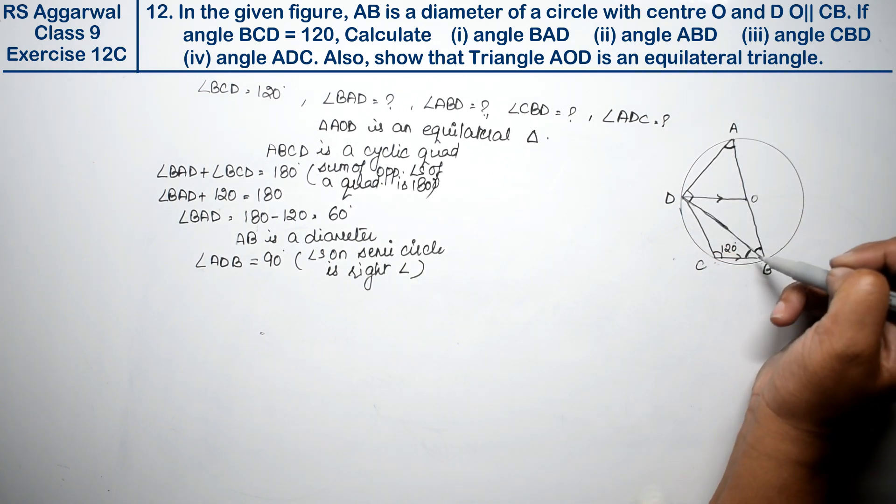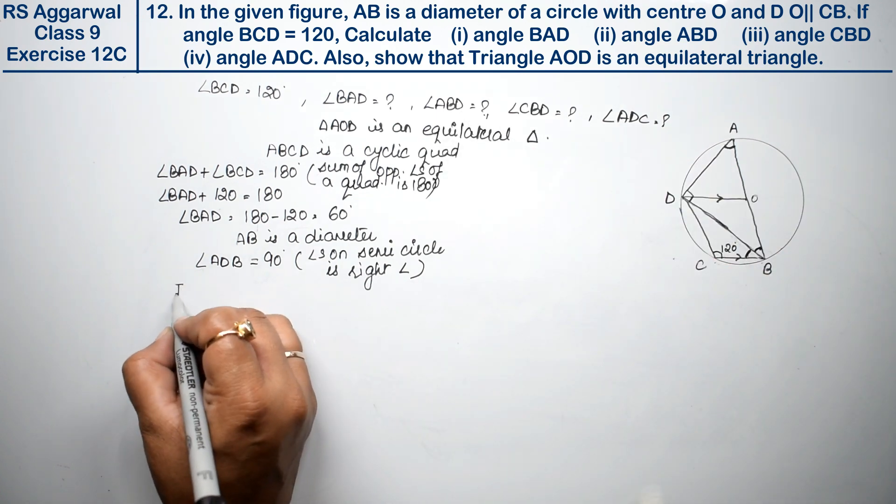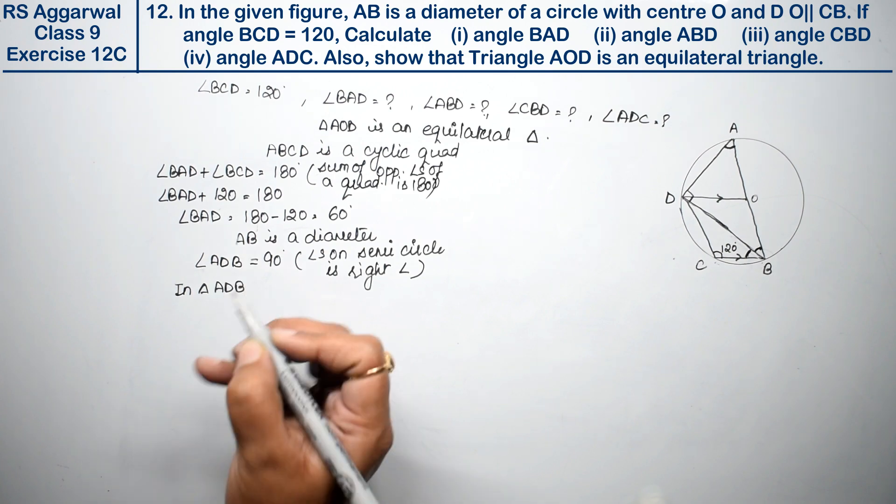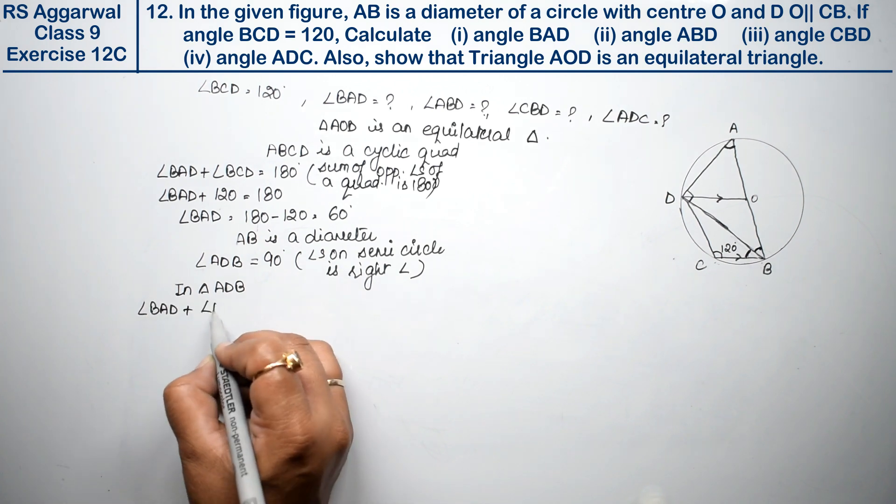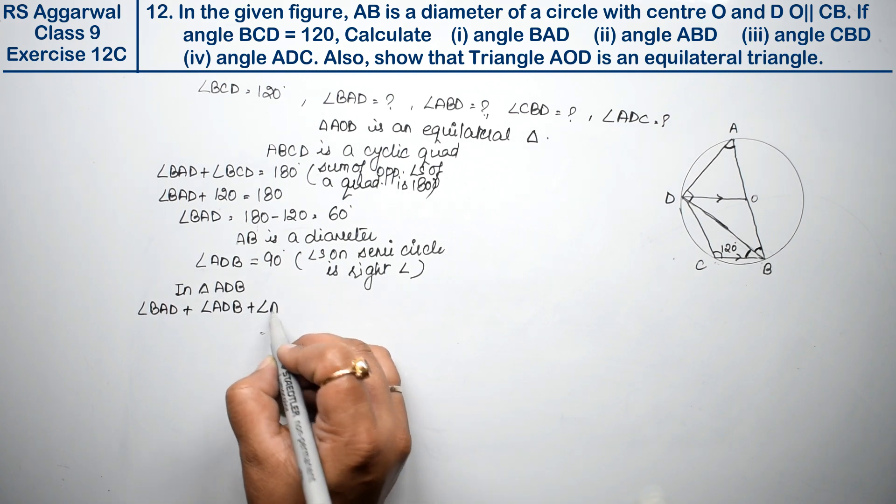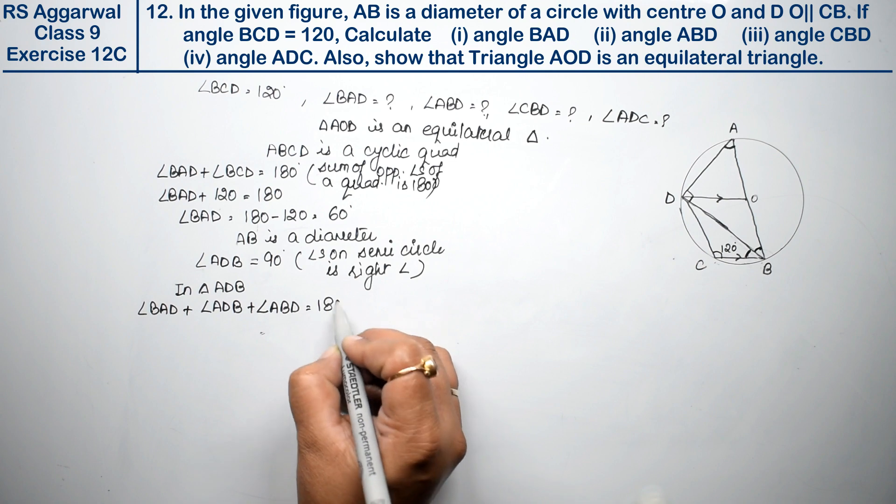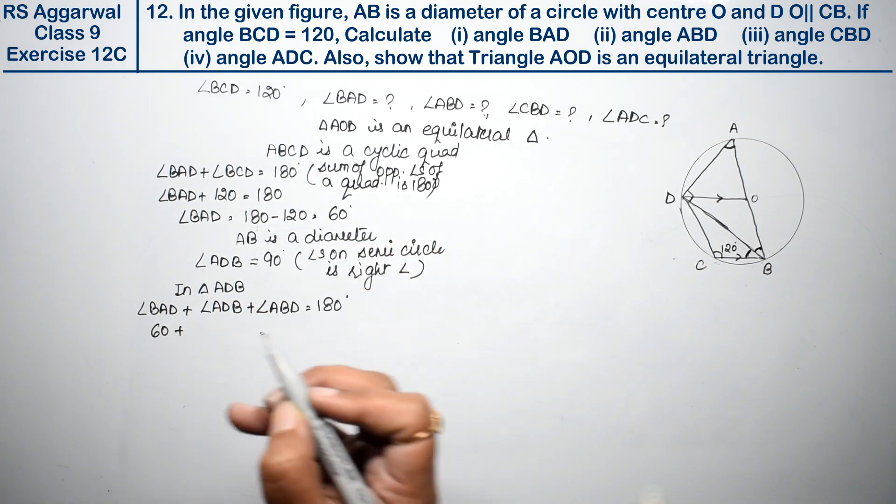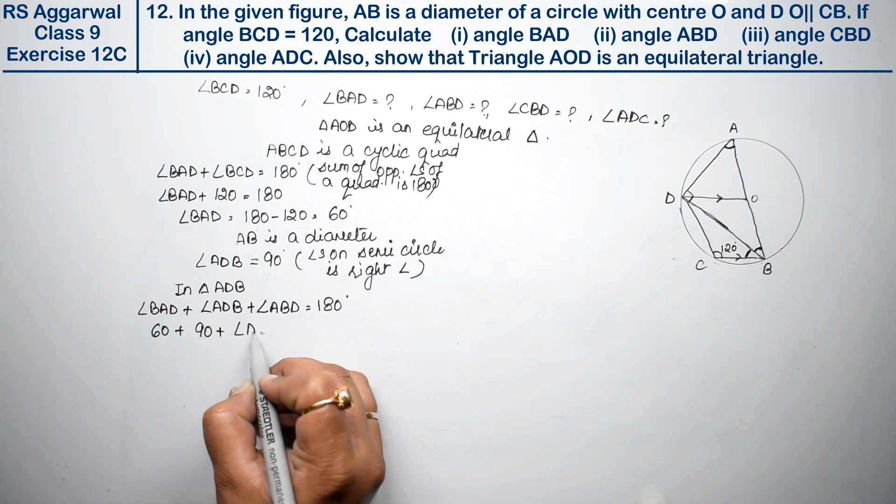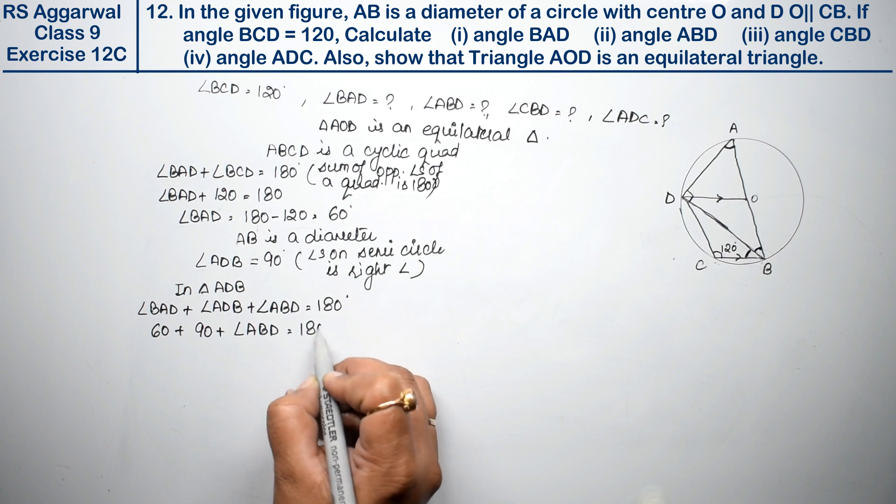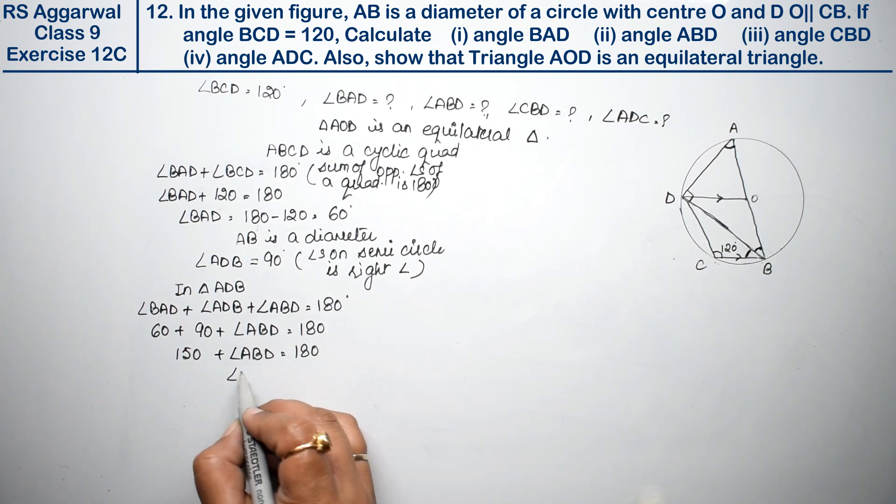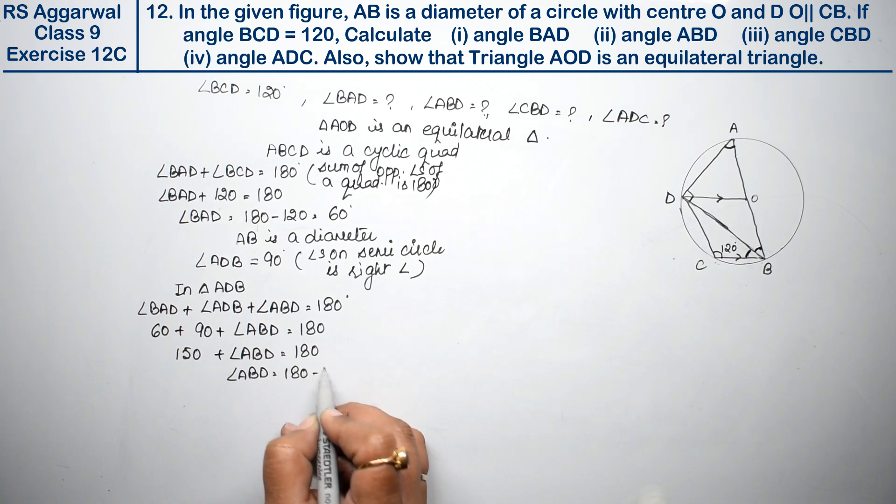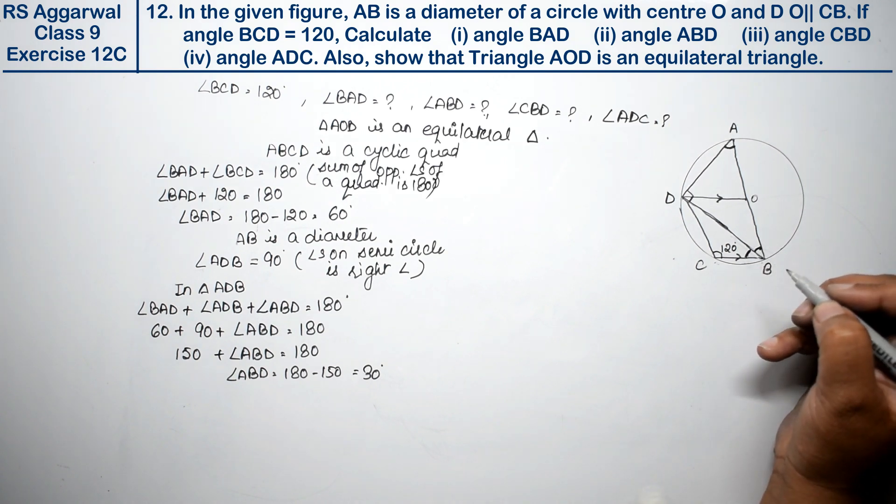Now let's look at triangle ADB. In triangle ADB, angle BAD is 60 degrees and angle ADB is 90 degrees, so 60 plus 90 plus angle ABD equals 180. Therefore, 150 plus angle ABD equals 180, so angle ABD equals 180 minus 150, which is 30 degrees.